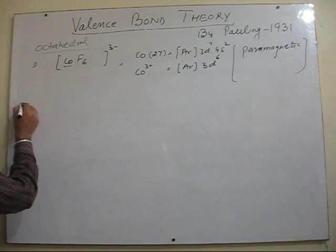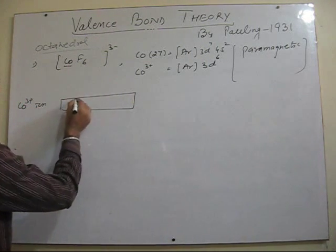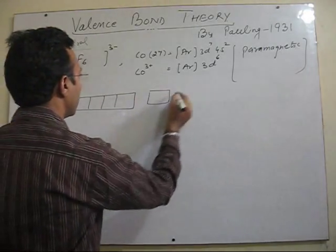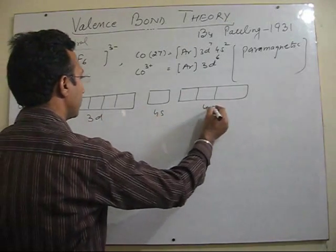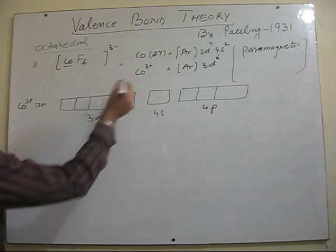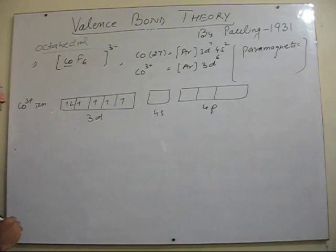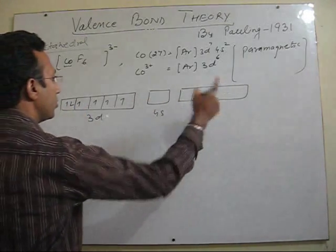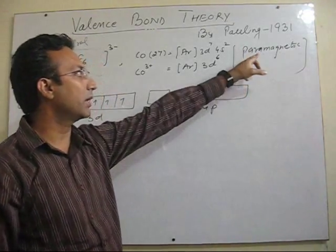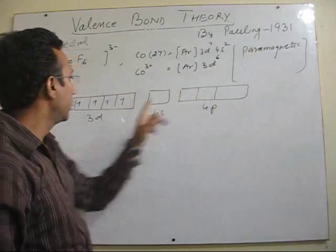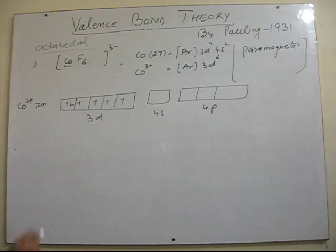Now let's explain this again. Cobalt plus three ion. This is the orbital representation. 3D, 4S, 4P. Now in this particular case you have six electrons just like in the previous case. So here, four are vacant. You need two more. You can either use these by pairing or you can use 4D. But the complex is paramagnetic. See here. If you pair up these electrons, then the complex will become diamagnetic in nature. So in this case, the fluoride ions are present.